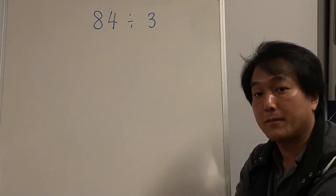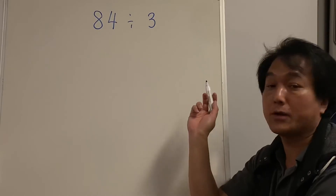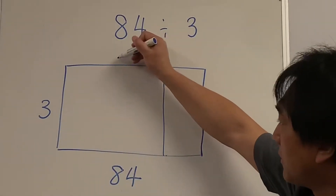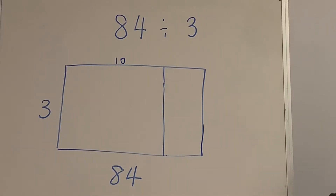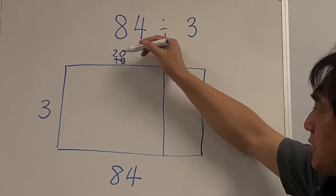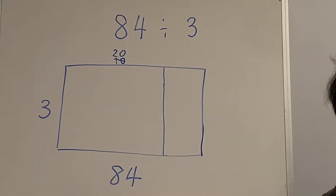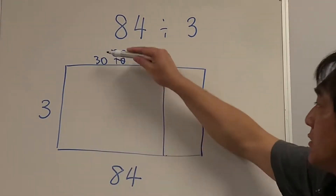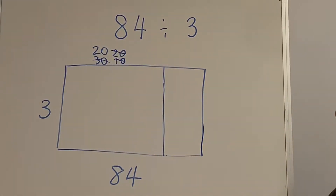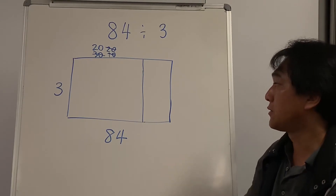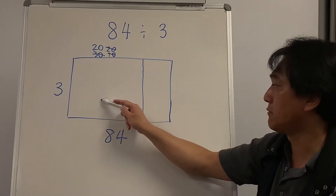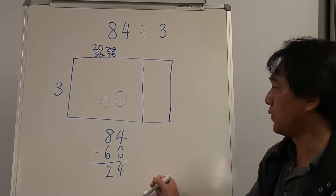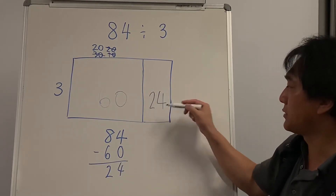84 divided by 3 — pause the video and see if you can do this by yourself. So I have 84 cupcakes altogether. 3 lots of 10 is 30 — fits. 3 times 20 is 60 — still fits. 3 times 30 is 90 — too many. So I'll use 20 columns: 3 times 20 is 60. I just used 60 cupcakes, and 24 are left over. So I should have 24 in this box.